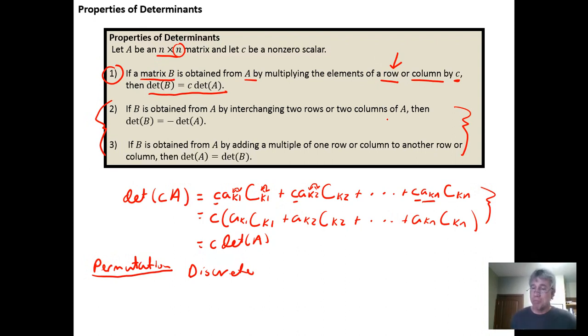But bottom line is, key takeaways here, we've got three properties that identify how elementary row operations impact calculations of determinants. We'll be able to use these properties to simplify determinate computations by using elementary row operations to introduce zeros into our matrices.